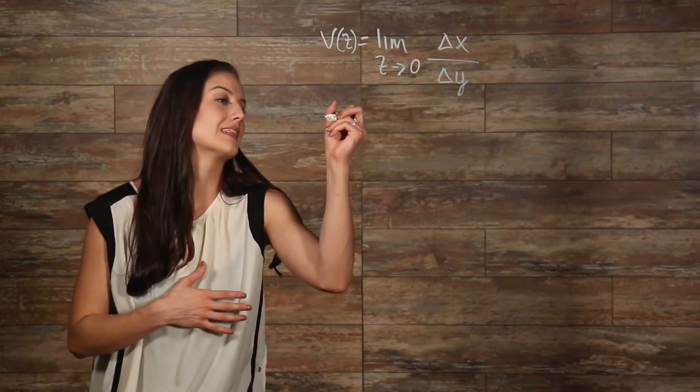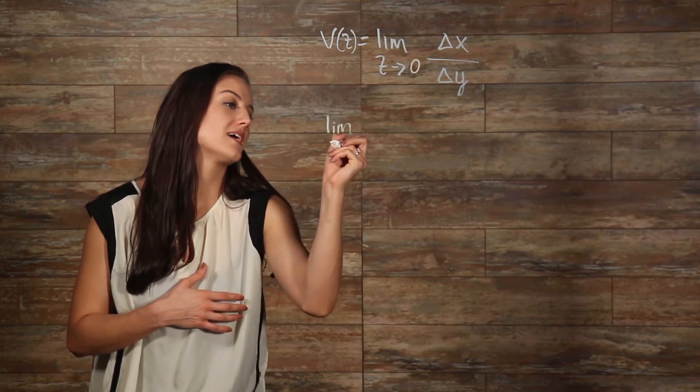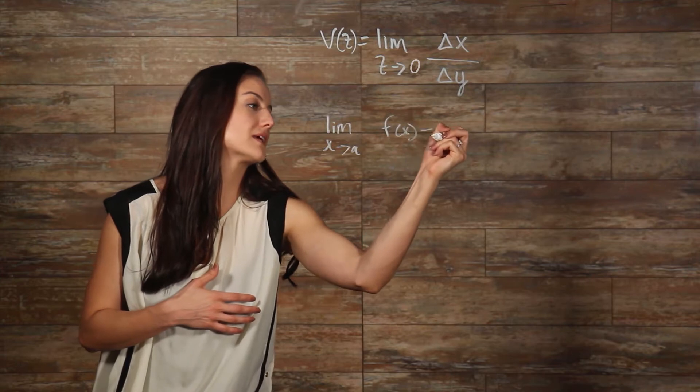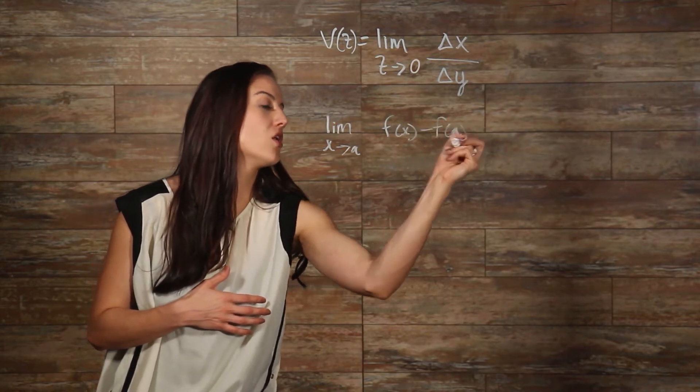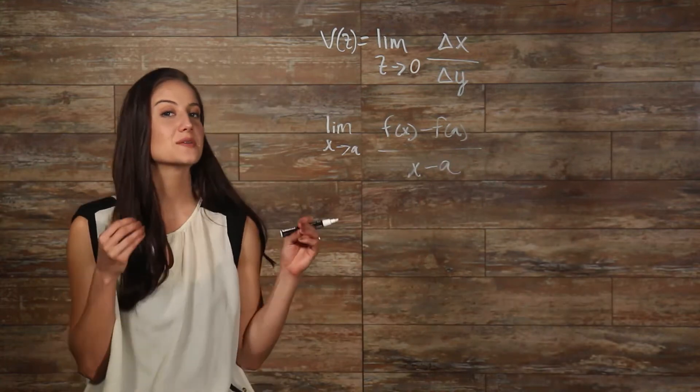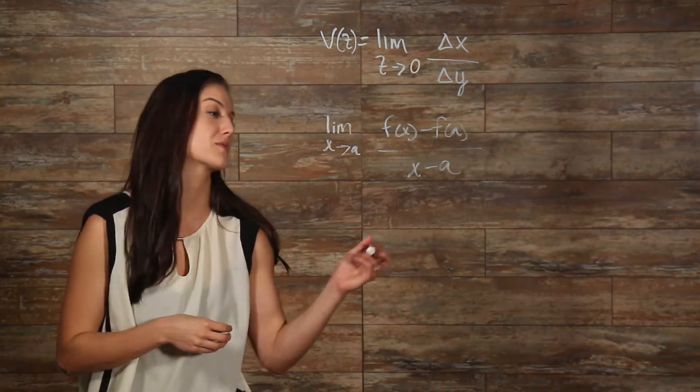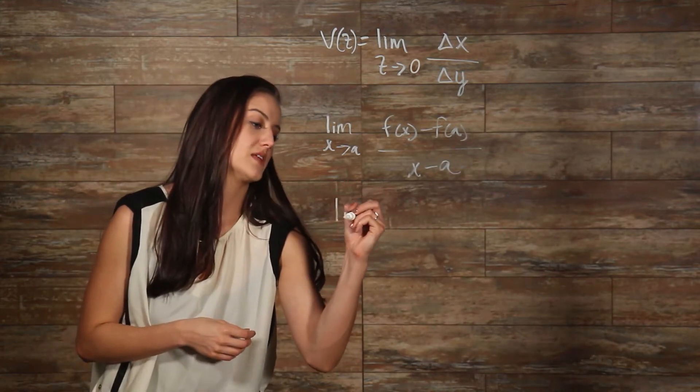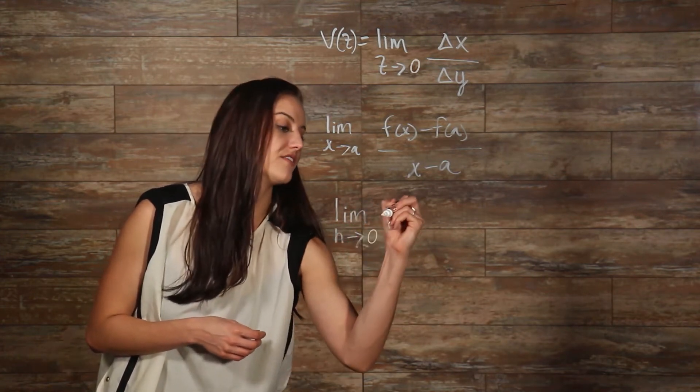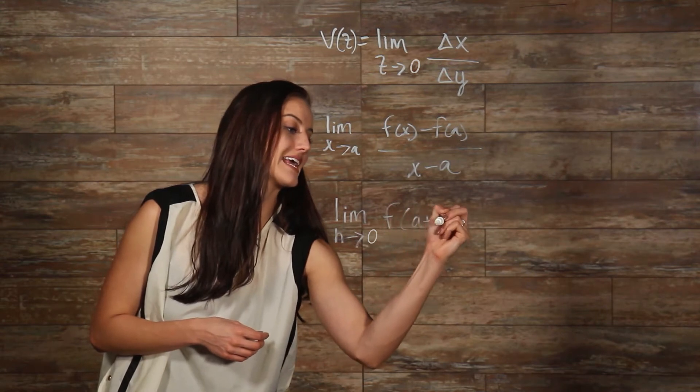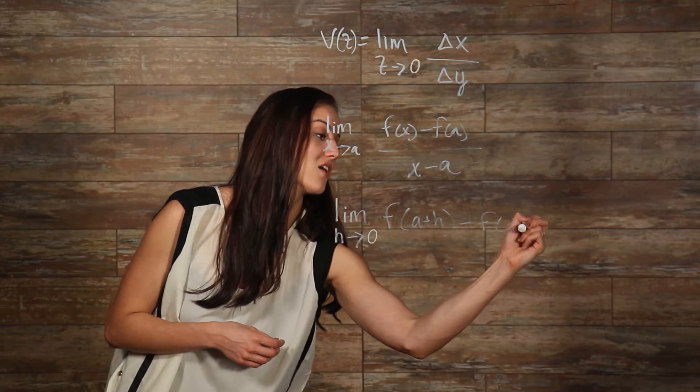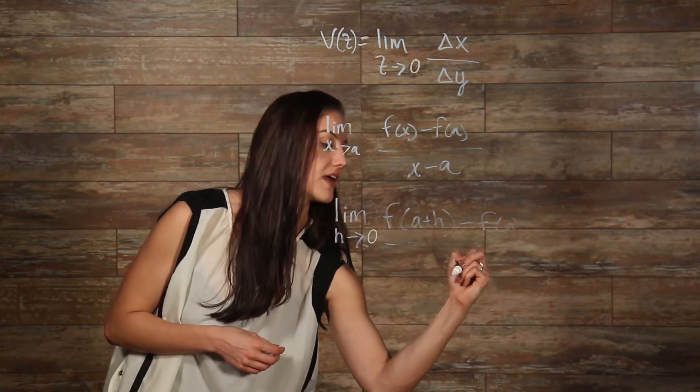And to simplify even further, this can be rewritten as the limit as h goes to 0 of f of a plus h minus f of a all over h.